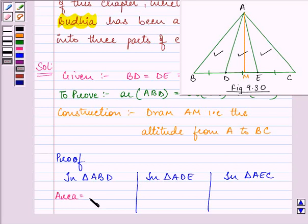Area of the triangle is half into base, that is BD for this triangle, into altitude that is AM, that is common for all these three triangles.